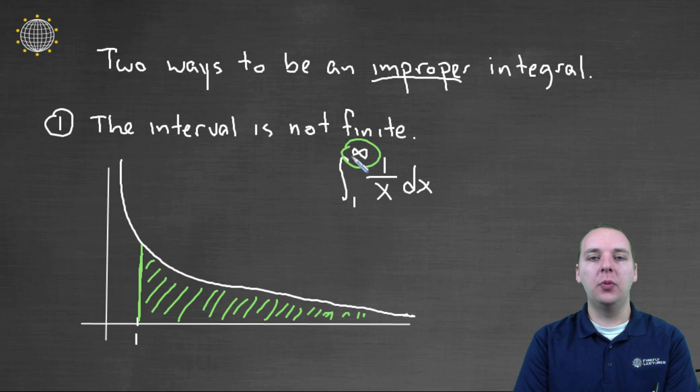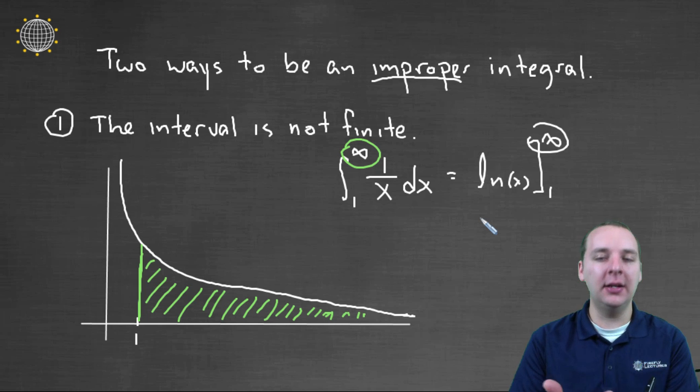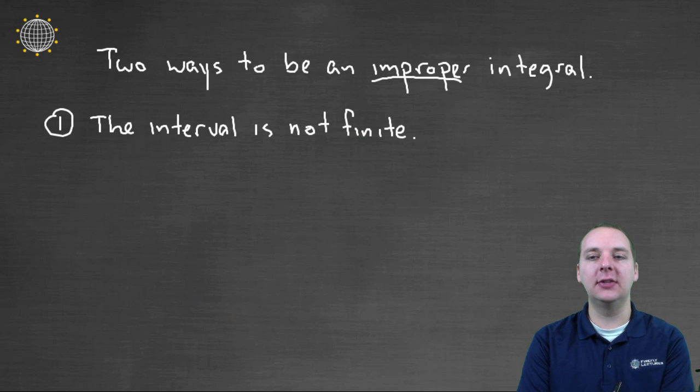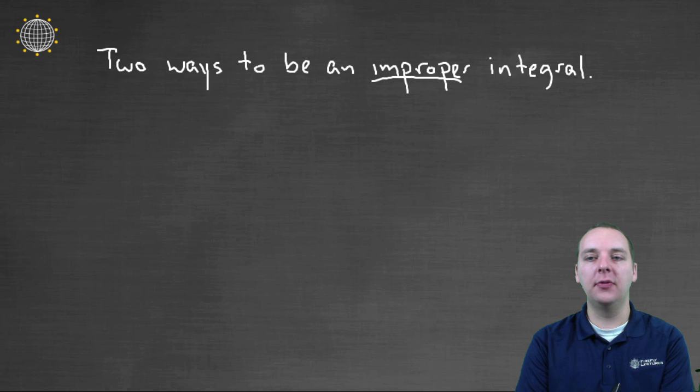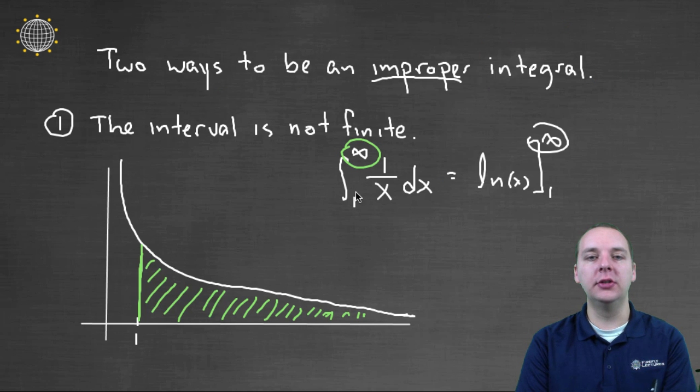But we'll unpack some of those details in a later video where we actually work out some of these examples. But for now, let's just understand what this notation means. You could not do this integral like this. You could not say, oh well the integral of 1 over x is the natural log of x, and then I'll put a bracket with a 1 and an infinity. See what you're trying to use is the Fundamental Theorem of Calculus, but you can't. It doesn't satisfy the necessary criteria for the Fundamental Theorem of Calculus.